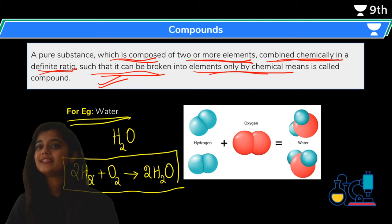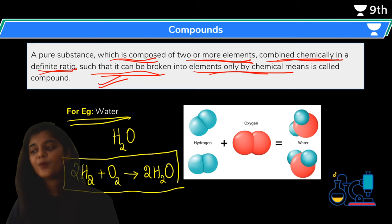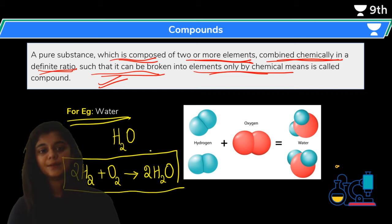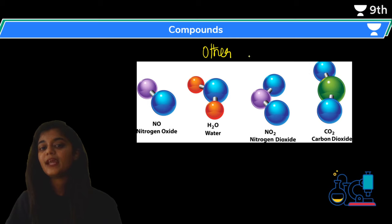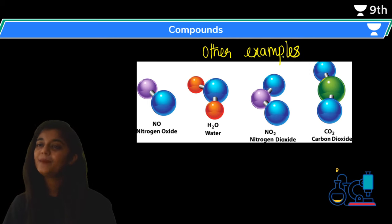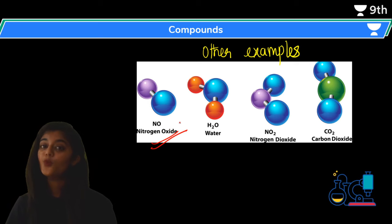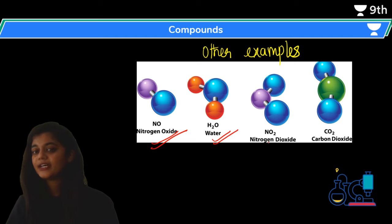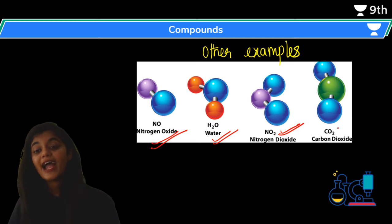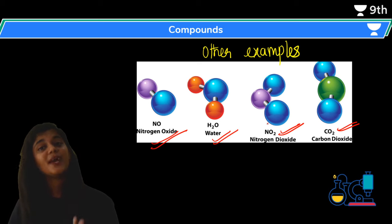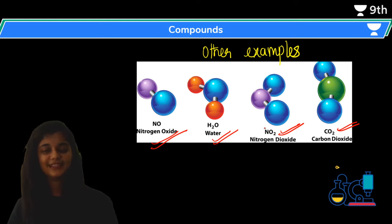One example is water, which is made up of two moles of H₂ and one mole of oxygen, giving two moles of water. This illustrates combining chemically in a definite ratio — it is not that elements can be combined randomly in any proportion; it must be in a definite proportion. Other examples include nitrogen oxide (one nitrogen, one oxygen), nitrogen dioxide, and carbon dioxide (carbon and oxygen). These are basic examples you should note down.